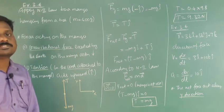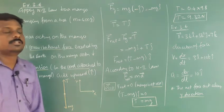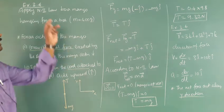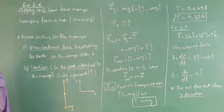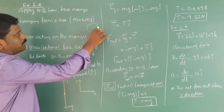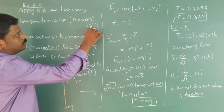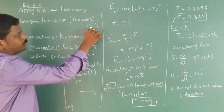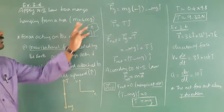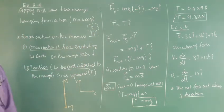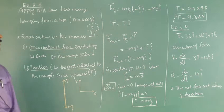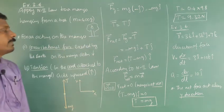Good morning students. In this class we are going to see example problem 3.4: apply Newton's second law to a mango hanging from a tree. Consider a tree — a mango is hanging with a mass of 400 grams. Draw the free body diagram and find the tension in the mango.